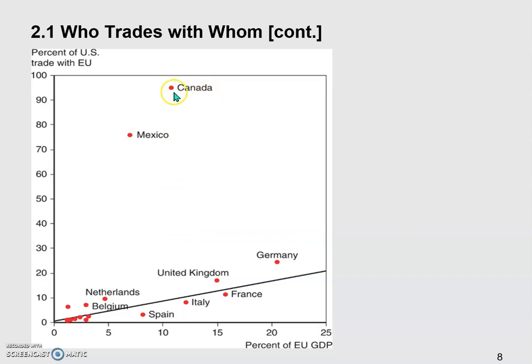However, the trade volume between Canada and the US could account for about 95% of the total trade between EU and the US. For Mexico, again, its size is slightly smaller than Spain, accounting for about 7% of the EU total output. However, the trade between Mexico and the US is much more than that between Spain and the US. The trade between Spain and the US accounts for less than 5% of the total EU-US trade, but Mexico trades more with the US. Its trade volume accounts for more than 75% of the total EU-US trade.